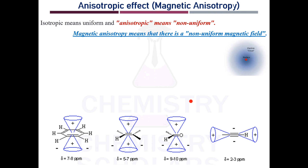Hello students. In NMR we generally study about the anisotropic effect, which is also called magnetic anisotropy. Isotropic means uniform or the same, and anisotropic means non-uniform. So here we are talking about magnetic anisotropy, which means there is a non-uniform magnetic field.